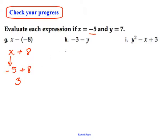Letter H, we have negative 3 minus y. Well, this time y is 7. So I'm just going to plug in 7 there. And that's the same as negative 3 plus a negative 7, which is a negative 10.